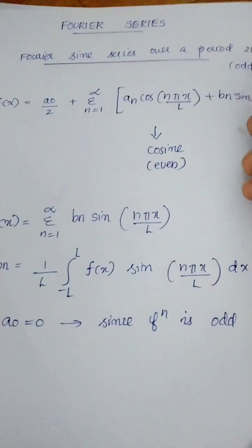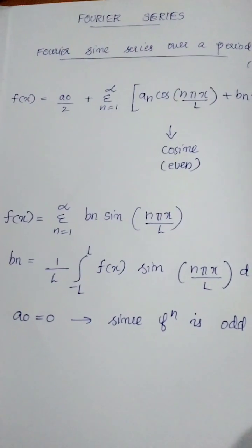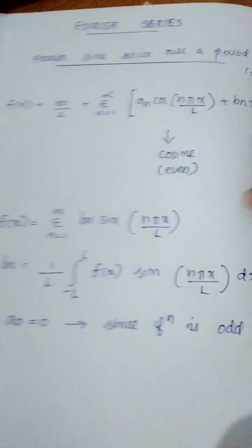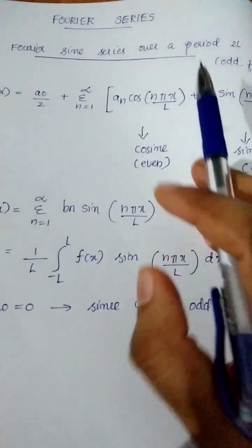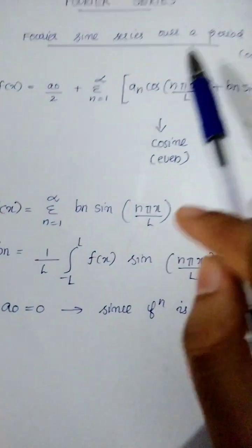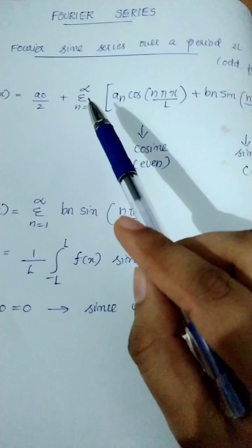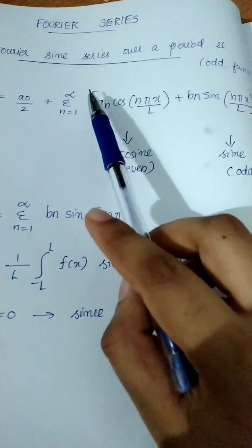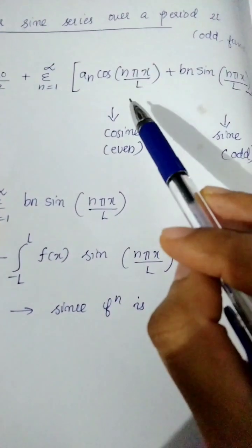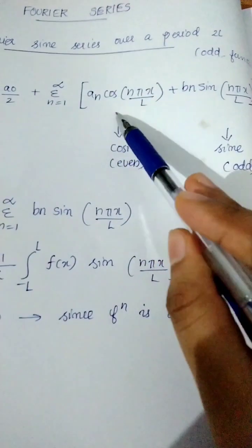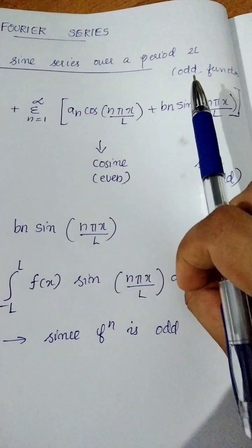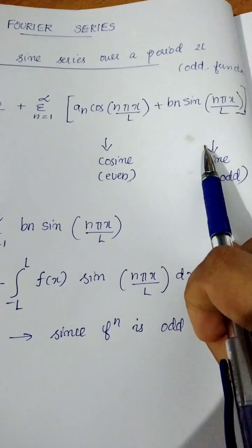Hi y'all, we are doing a Fourier series. We are doing a sine series in the Fourier series, with a 2L periodic function. F of x equals a0 by 2 plus sigma n equals 1 to infinity. This is the first equation of Fourier. We write an·cos(nπx/L), and this is bn·sin(nπx/L). This is the sine series.